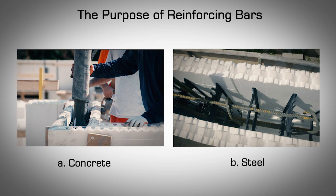Reinforcing steel has excellent strength in both compression and tension loads but is more expensive than concrete. Therefore, reinforced concrete structures are typically designed such that concrete is mainly utilized for most of the compressive forces, and reinforcing steel is utilized for all of the tensile forces and, in some cases, some of the compressive forces. Reinforced concrete structures have had a tremendous track record in some of the most complicated structures, including dams, bridges, and high-rise buildings across the globe.